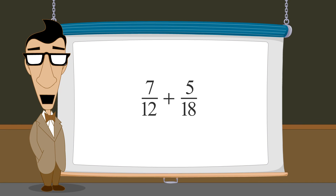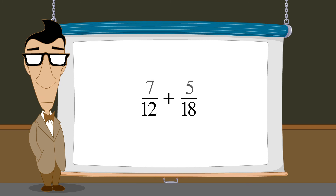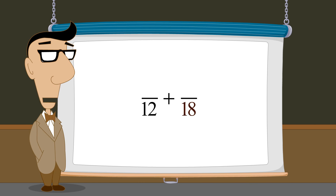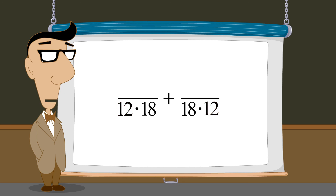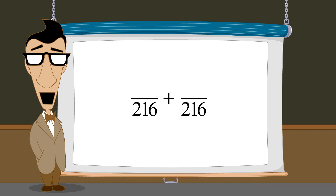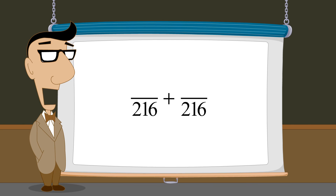By finding a common denominator, we can add or subtract fractions with different denominators. However, sometimes when we multiply the denominators of fractions together to find a common denominator, we create an unnecessarily large common denominator. We will see in the next lecture how to find the smallest possible common denominator, otherwise known as the least common denominator.